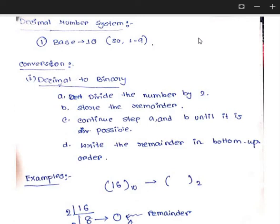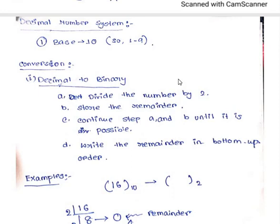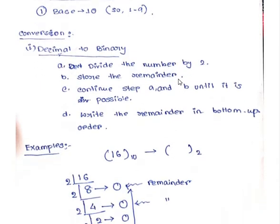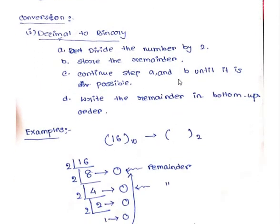Here we are going to discuss about the decimal number system. Decimal number system accepts 0 to 9, so the base of the decimal number system is 10. Now, conversion — as we have already discussed, we can convert a number from one base to another. So I can convert a decimal number to its equivalent binary number.